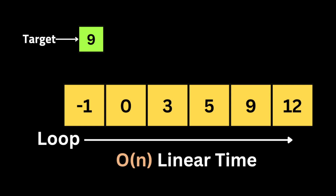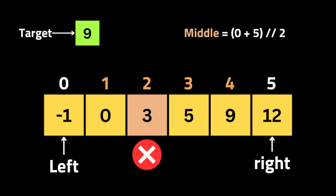The brute force approach is to loop through the array and each time check if the number at index i equals the target. But that gives us linear time complexity, which is inefficient for large input data. That's why we use binary search — we take advantage of the fact that the array is sorted, and each time we eliminate a part of it.